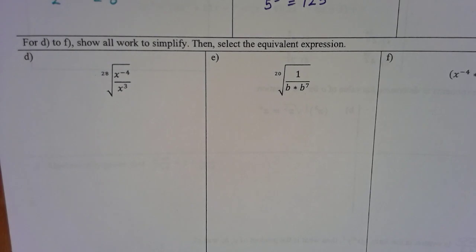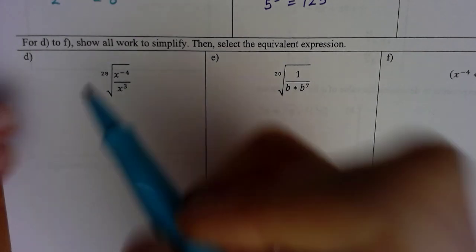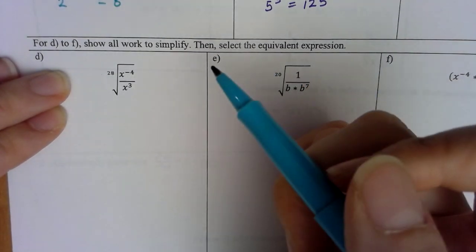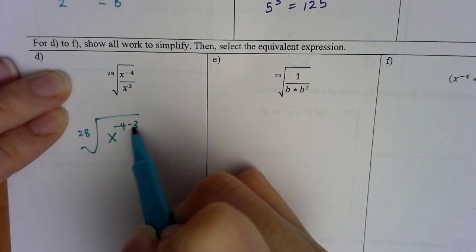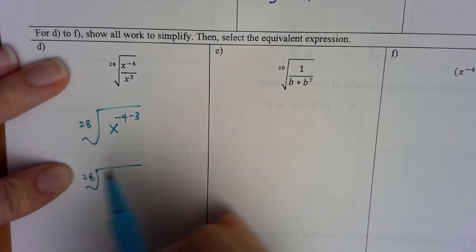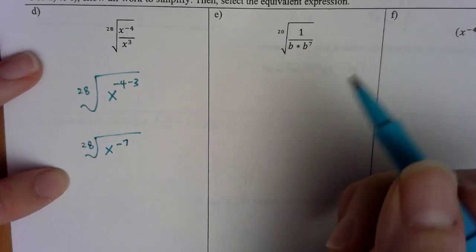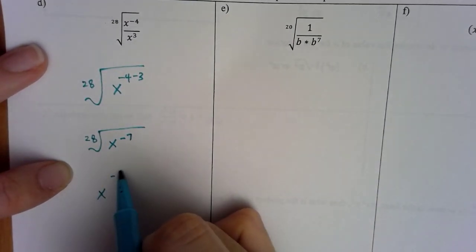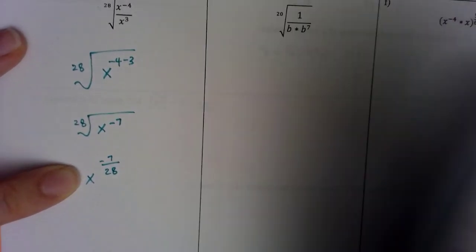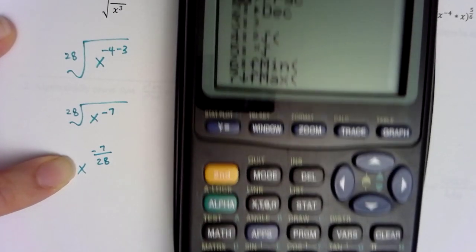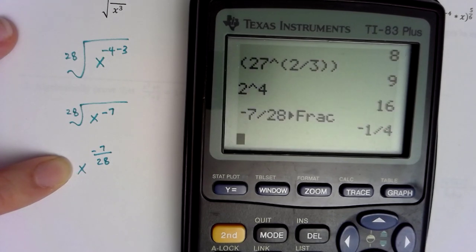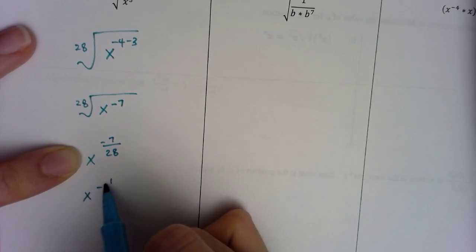For problems D through F, show all work to simplify and select the equivalent expressions. Whatever we learned about exponent properties still holds. Looking inside: we're dividing by the same base, so we subtract the exponents, which yields the 28th root of x to the negative 7. Now applying power over root, I use the calculator: negative 7 divided by 28 simplifies to negative 1 over 4.